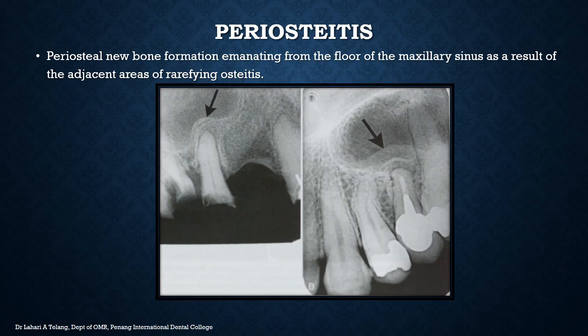Periostitis is a new bone formation emanating from the floor of the maxillary sinus, seen as a result of adjacent areas of rarefying ostitis. Both images here show maxillary premolars with roots very close to the maxillary sinus floor. As a result of inflammatory reaction at the apex of the premolar, the mucosal and periosteal lining on the floor of the maxillary sinus also gets inflamed, leading to more bone formation there, and in some cases mild mucositis as well. This reaction, called periostitis, is very commonly seen in the maxillary premolar and molar regions.